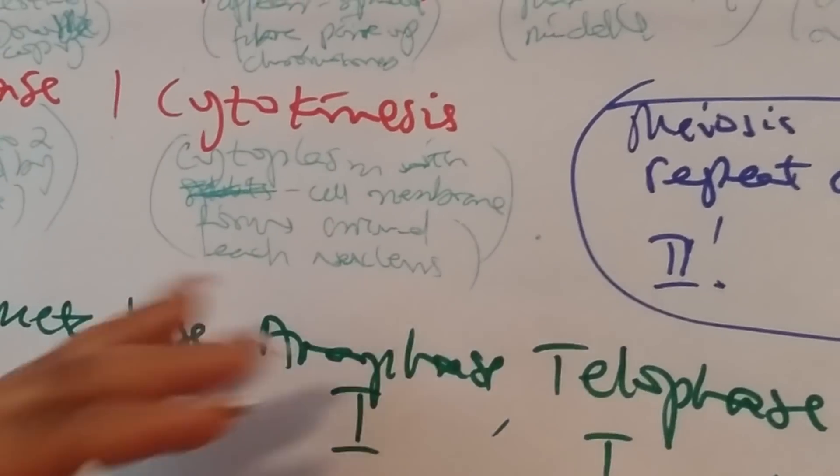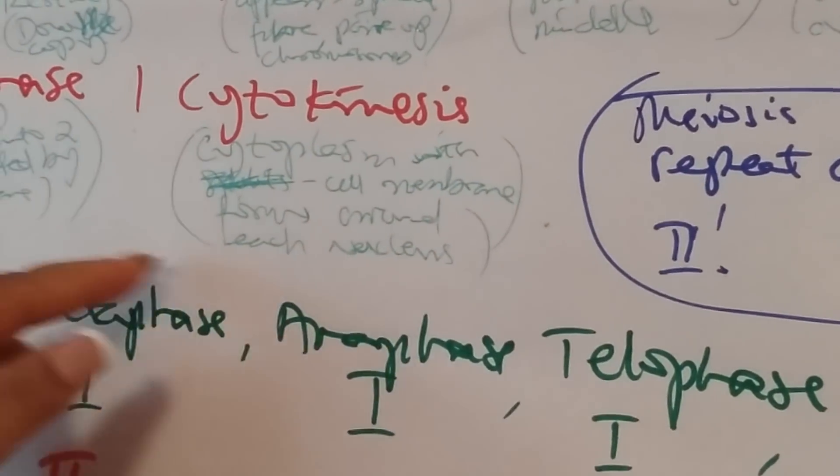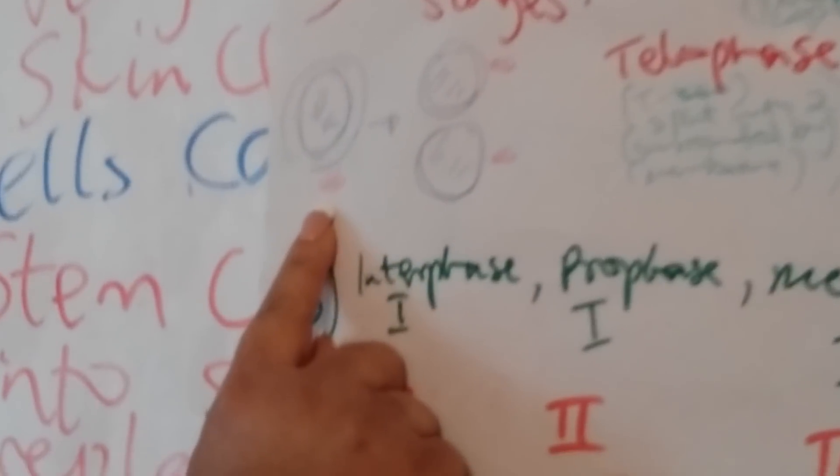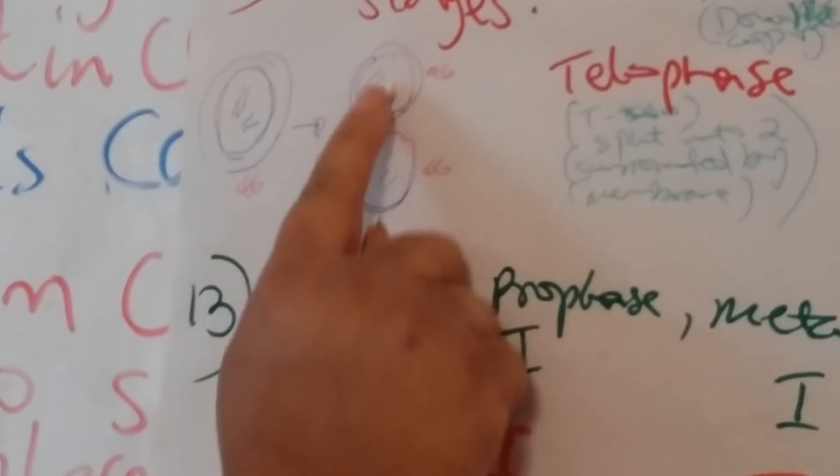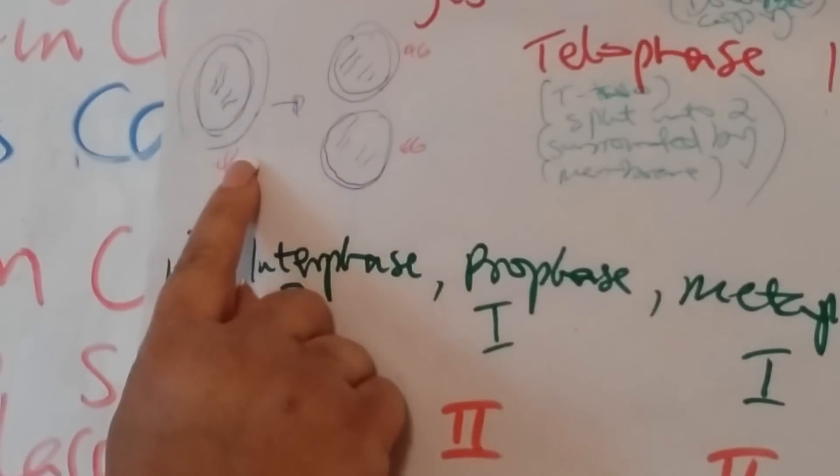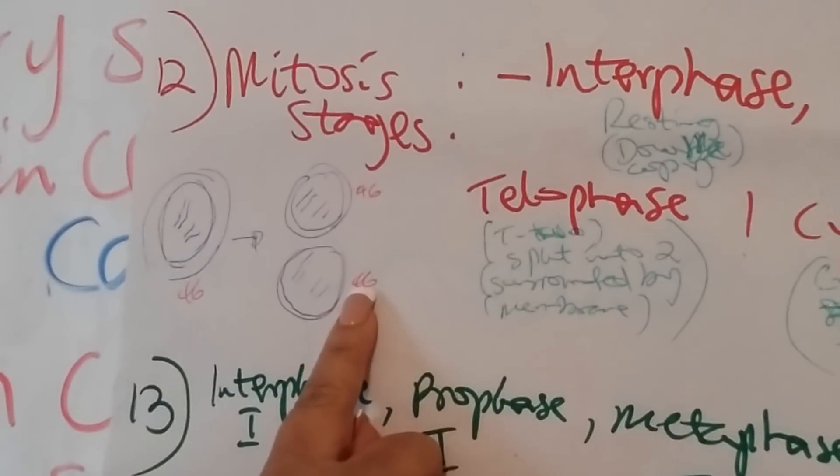For cytokinesis, I remember cytoplasm—the cytoplasm with the cell membrane forms around each nucleus. You have two daughter cells produced. Starting with 46 chromosomes, you end up with two daughter cells exactly like the parent cell, 46 and 46.